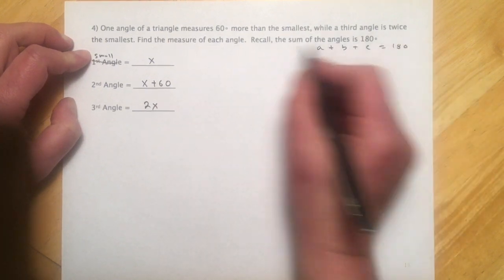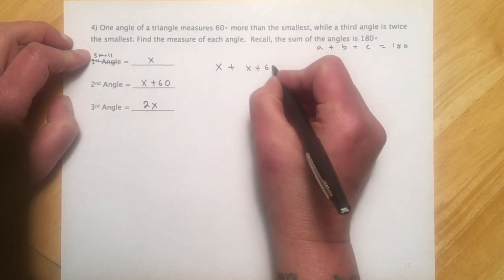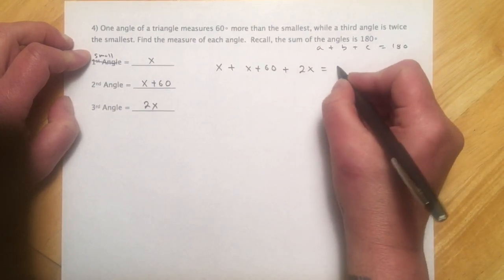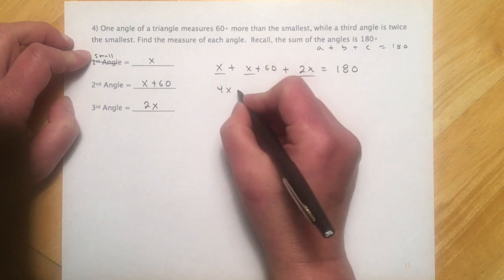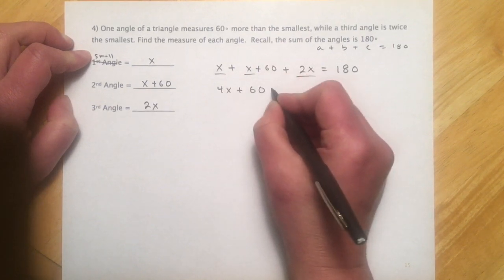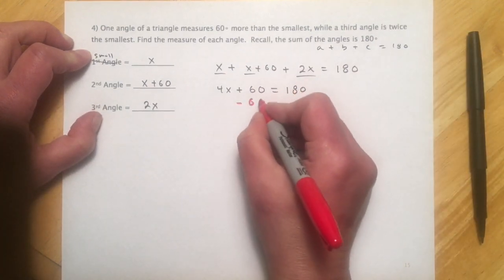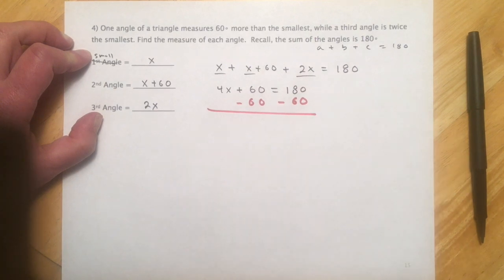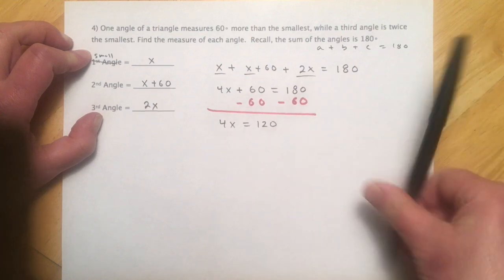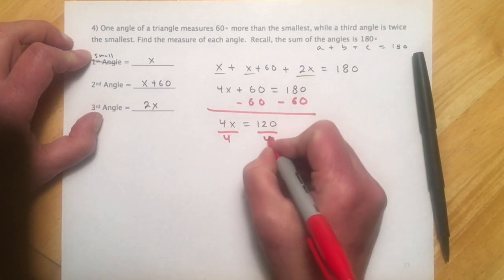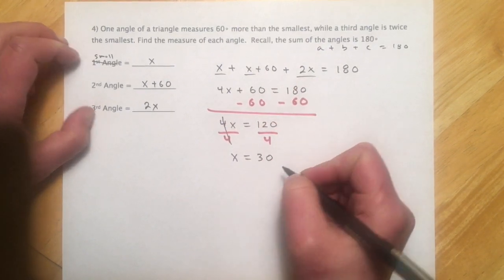And then we just chunk them in here, set it to 180 and solve. So x, our first angle, x plus 60, our second angle, 2x is our third angle. That makes 180. I got 4 x's plus 60 equals 180 degrees. Take the 60 over, and 4x equals 120, and divide over that 4. I'll get us our first angle. So x equals 30.